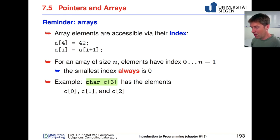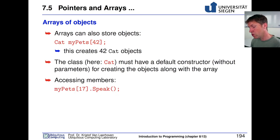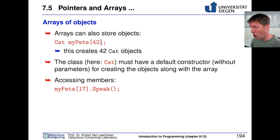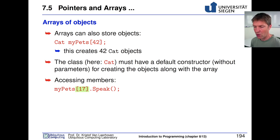If we have three characters named C, we can index those from 0 all the way to 2. We can also have arrays of our own classes — for example, we can create an array of 42 instances of class Cat called myPets, creating 42 cat objects in one go. When using an array of objects of a class, the class must have a default constructor, since that constructor is called as the array is initialized. Accessing members works as before, with the added index.